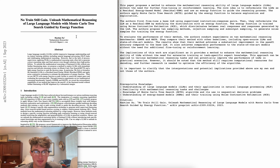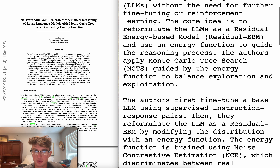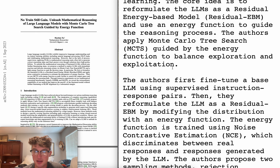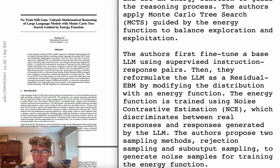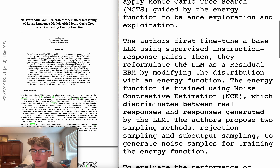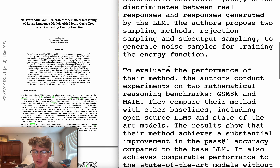No Train Still Gain - unleash mathematical reasoning of large language models with Monte Carlo tree search guided by energy function. Proposes a method to enhance math reasoning ability of LLMs without need for fine-tuning or RL. Core idea is to reformulate LLMs as a residual energy-based model and use an energy function to guide the reasoning process. The authors apply Monte Carlo tree search guided by the energy function to balance exploration and exploitation. Are they using the probabilities of the logit outputs to guide a Monte Carlo tree search? I'm confused. They fine-tune a base LLM using supervised instruction-response pairs, then reformulate their LLM as a residual EBM by modifying the distribution with an energy function. The energy function is trained using noise contrastive estimation, which discriminates between real responses and responses generated by the LLM. Proposed two sampling methods: rejection sampling and sub-output sampling. I have no clue what's happening here.